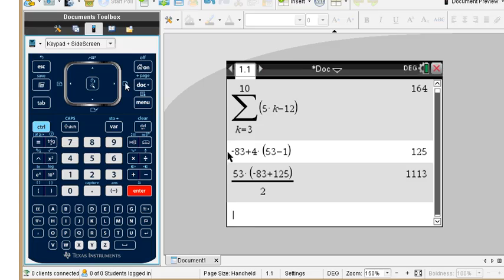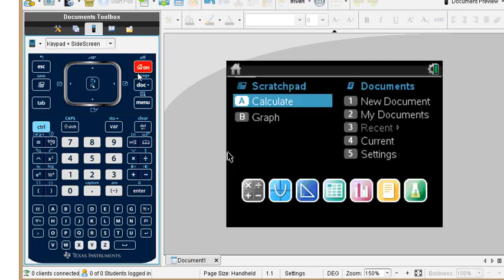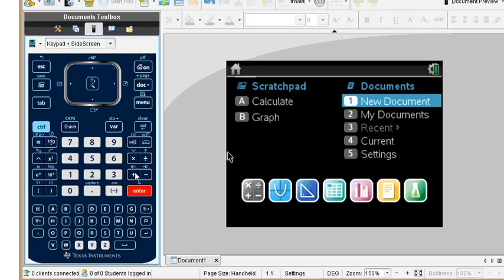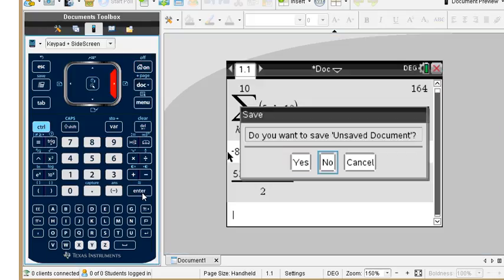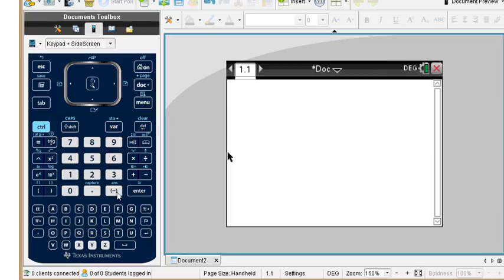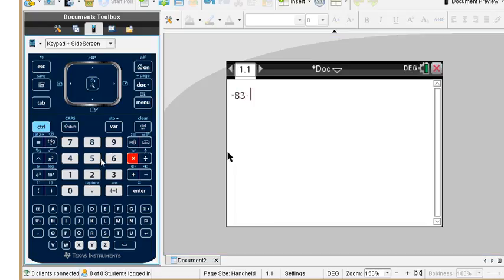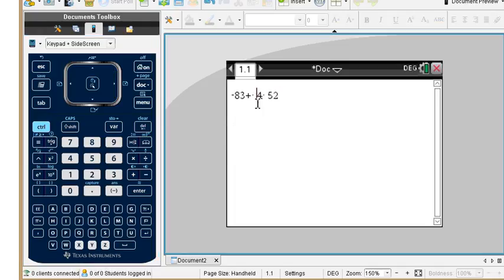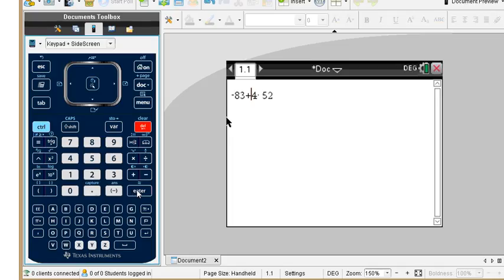Let's go get that in our calculator. So we have negative 83 plus 4 times 52. And we've got this here. There we go. That should get it. 125.